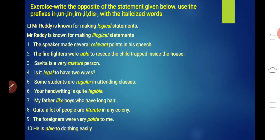So this exercise that we see, doing this will also be very fun and we will gain more knowledge of prefixes and suffixes. Let's do this exercise. All of you do it along with me. Exercise: Write the opposite of the statement given below. Use the prefixes IR, UN, IN, IM, IL, DIS with the italicized words. Beta, the italicized words that are given below in dark color, we have to attach these prefixes to them to make opposites. What are these prefixes? IR, UN, IN, IM, IL, DIS. Let's do it.